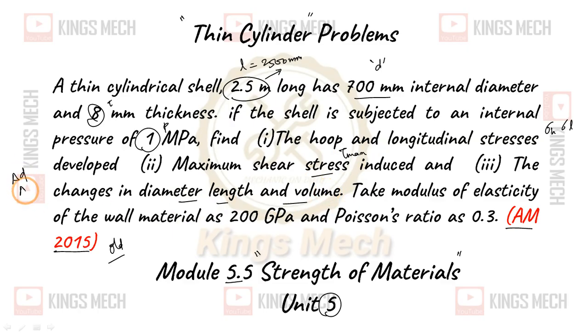So del D, del L, del V. Take modulus of elasticity of the wall material as 200 GPa, E, and Poisson ratio which is equal to 0.3. The question is easy to explain, but one twist has been given: the internal diameter. We need to find capital D, external diameter. So how to solve that?